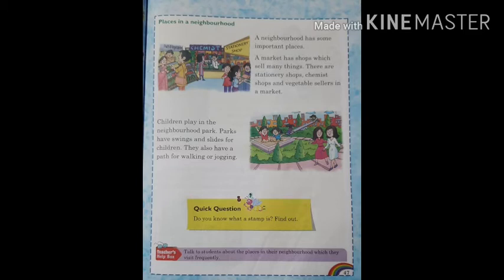Village area में ज़्यादातर parks नहीं होते लेकिन cities में बड़े-बड़े parks होते हैं। Cities में बच्चों के लिए खेलने की जगह नहीं होती, jogging और walk के लिए जगह नहीं होती। लोग parks में जाकर jogging और walk करते हैं। Parks में पेड़-पौधे लगे होते हैं जिससे fresh air मिलती है, और early morning exercise से हम fit and healthy महसूस करते हैं।